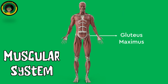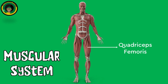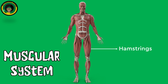Gluteus Maximus, located in the buttocks, allows for hip extension and rotation. Quadriceps Femoris, located in the front of the thigh, allows for knee extension. Hamstrings, located in the back of the thigh, allow for knee flexion and hip extension.